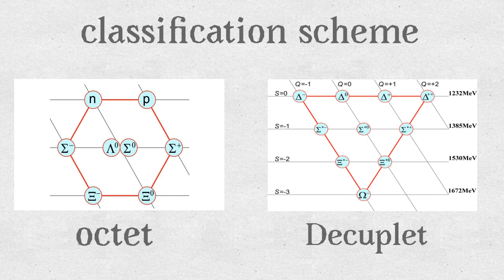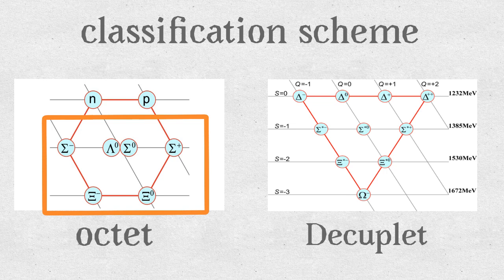Particles within each of the families had similar properties. In the octet diagram, the proton is marked as p, the neutron is marked as n, and there are six other particles with strange names expressed by Greek letters.